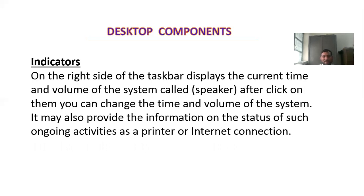On the right side of the taskbar you have the time, internet connection, Wi-Fi network connection, antivirus installed, date and time, and volume. Shortcuts are also made there. We call these indicators — they are the indicators we use on the computer. We can use volume to adjust up and down, update date and time, and stop or activate these indicators.